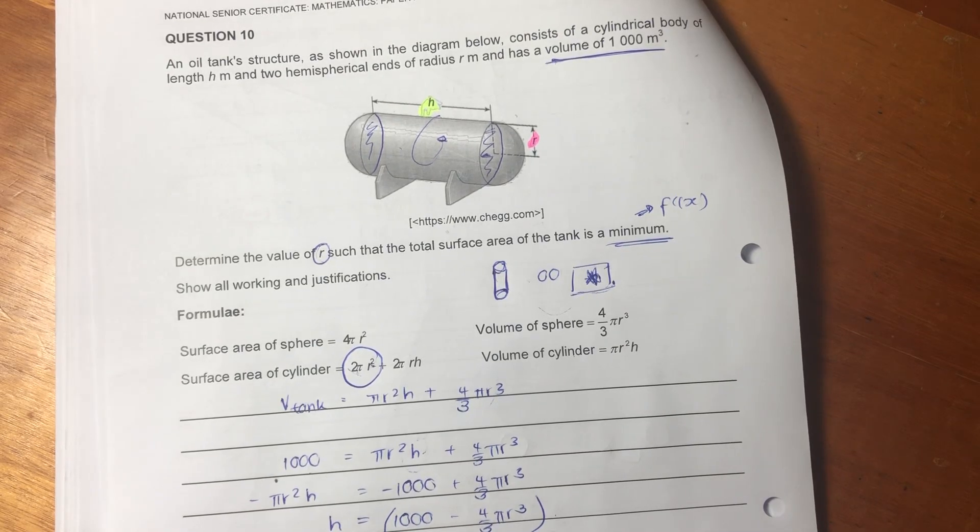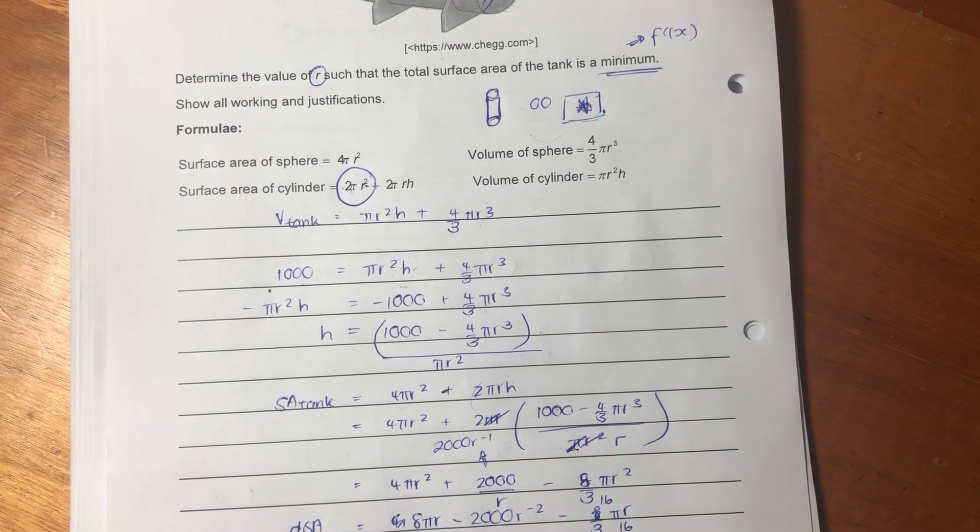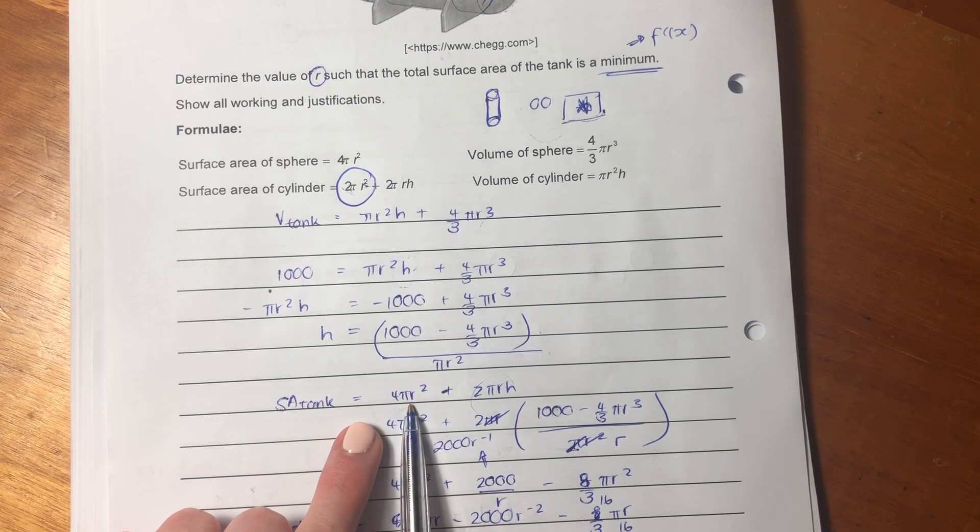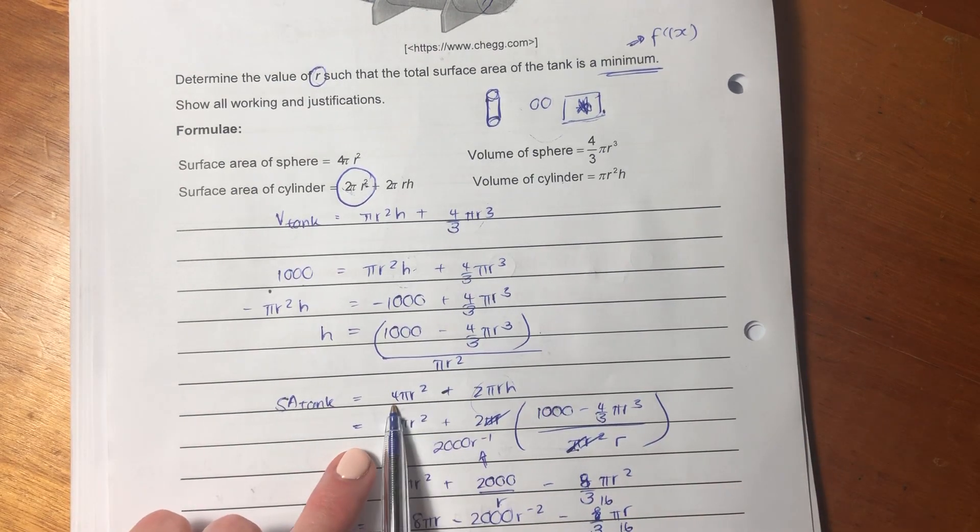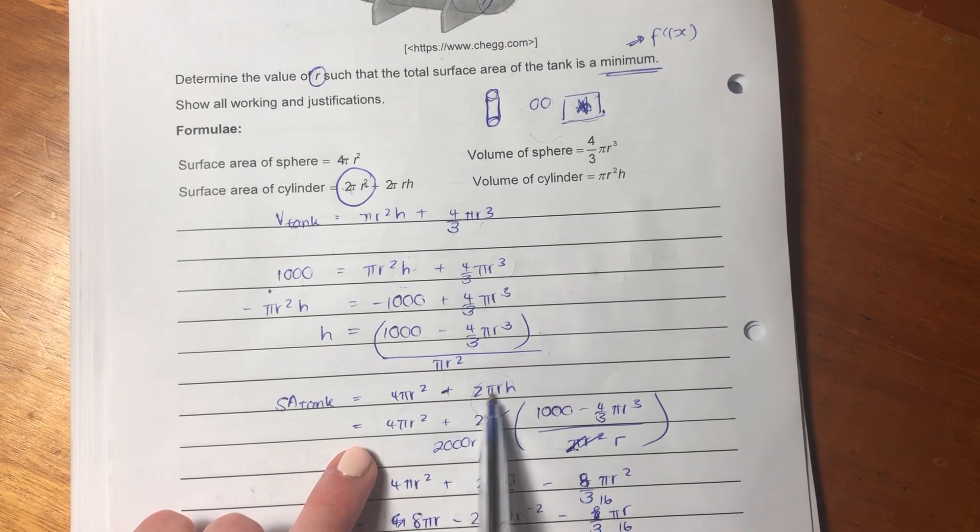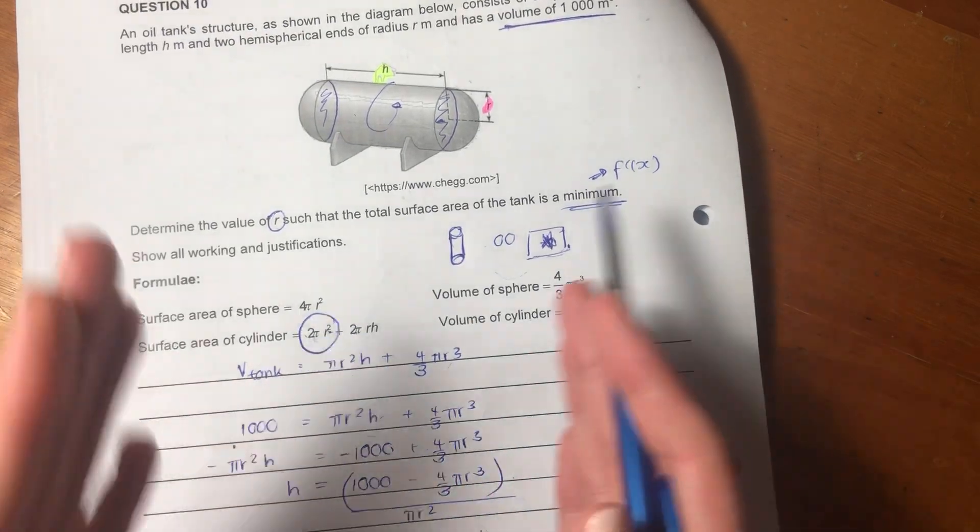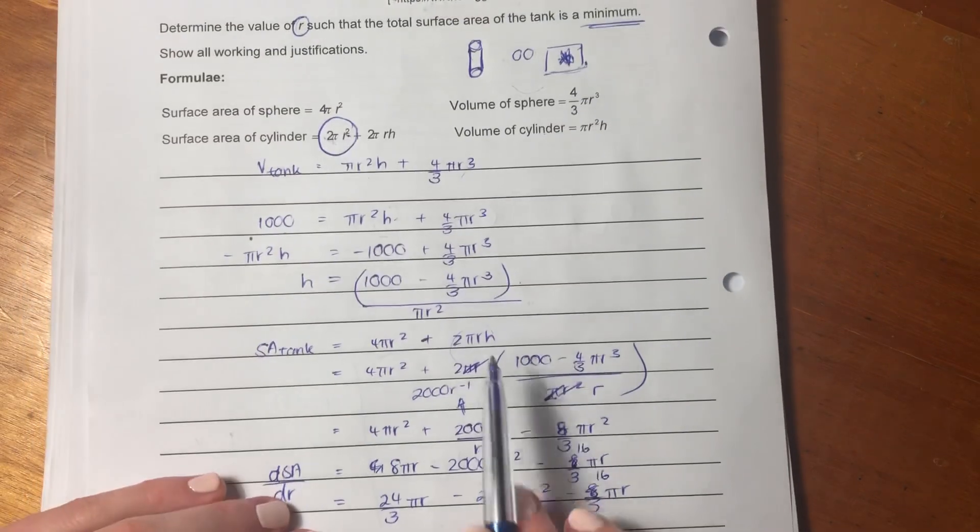So, surface area, what they're testing you here is whether you actually understand what surface area means. So, surface area means the area that is on the surface. So, the only parts that's on the surface are these two hemispheres, which add up to a sphere, and the rectangular piece from the cylinder, not the two circles. So, I've done that.